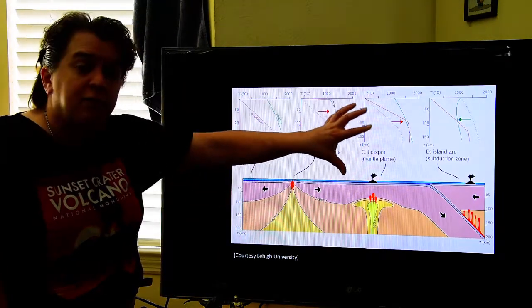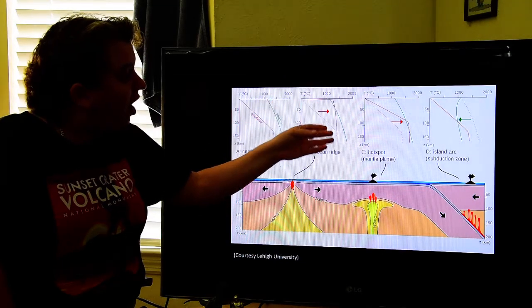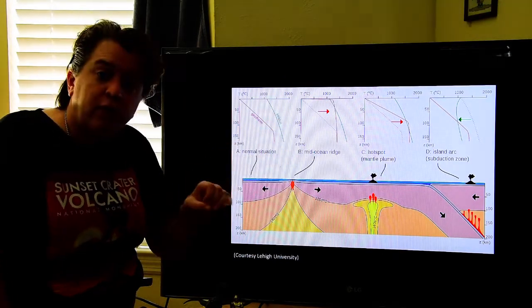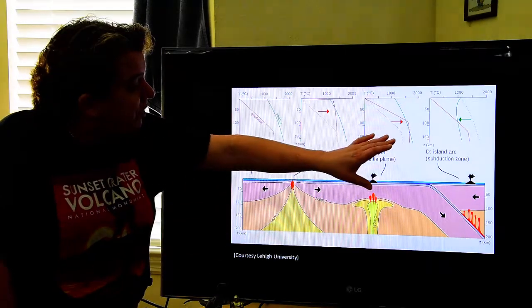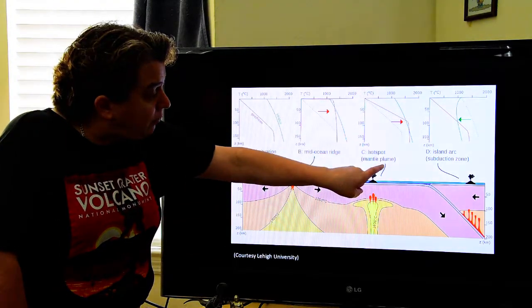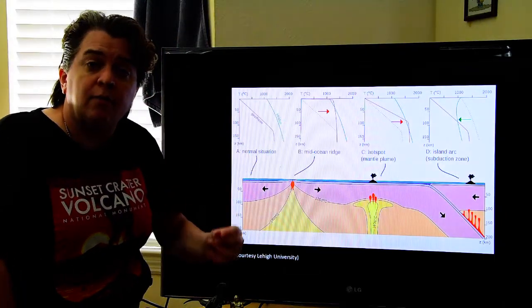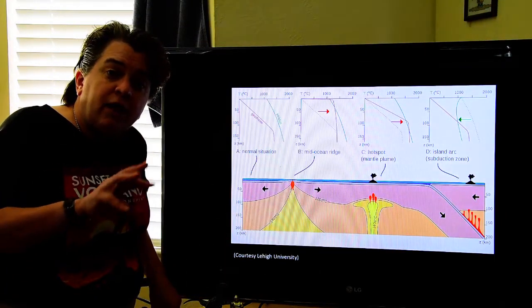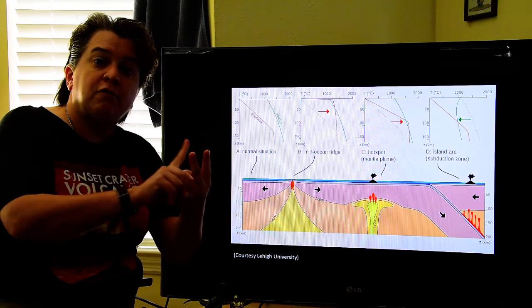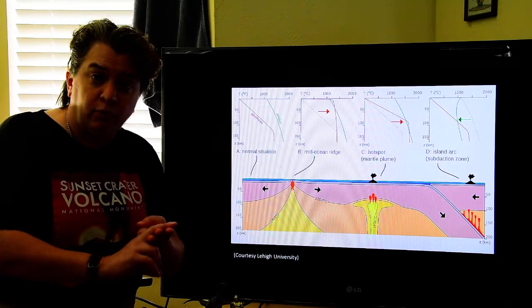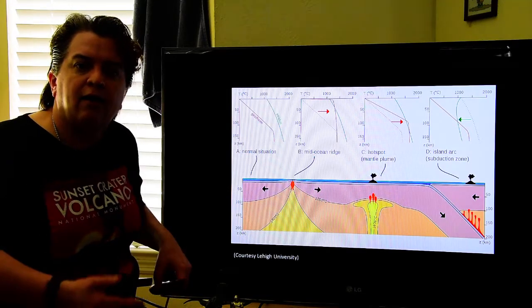However, there are three circumstances where you get this melting occurring. You can have lower pressure, so you have hot rocks at lower pressure. That's what you get at divergent plate boundaries like the mid-ocean ridge or rift valleys. You can have extra heat like what you get at a mantle plume. Or you can have that addition of volatiles like what you get at a subduction zone. So those are really the three places on the planet where we tend to see volcanic activity: rift zones, subduction zones, and mantle plumes.